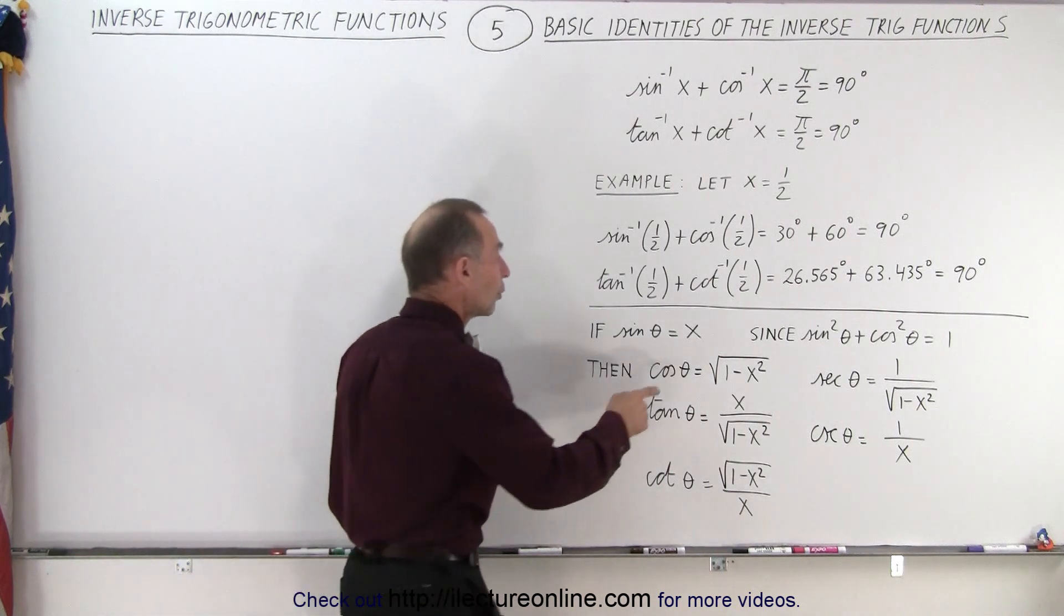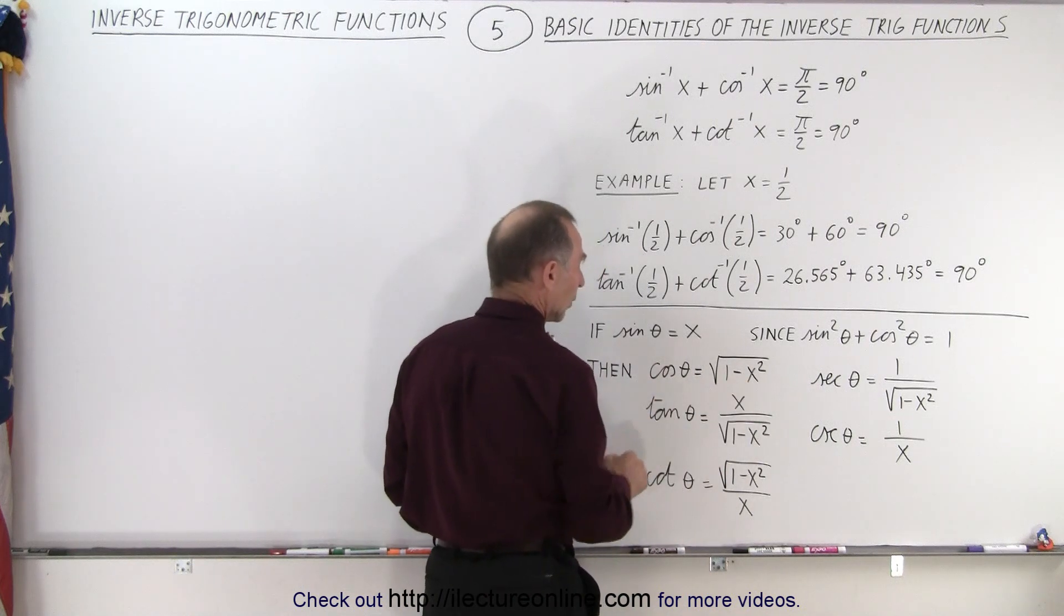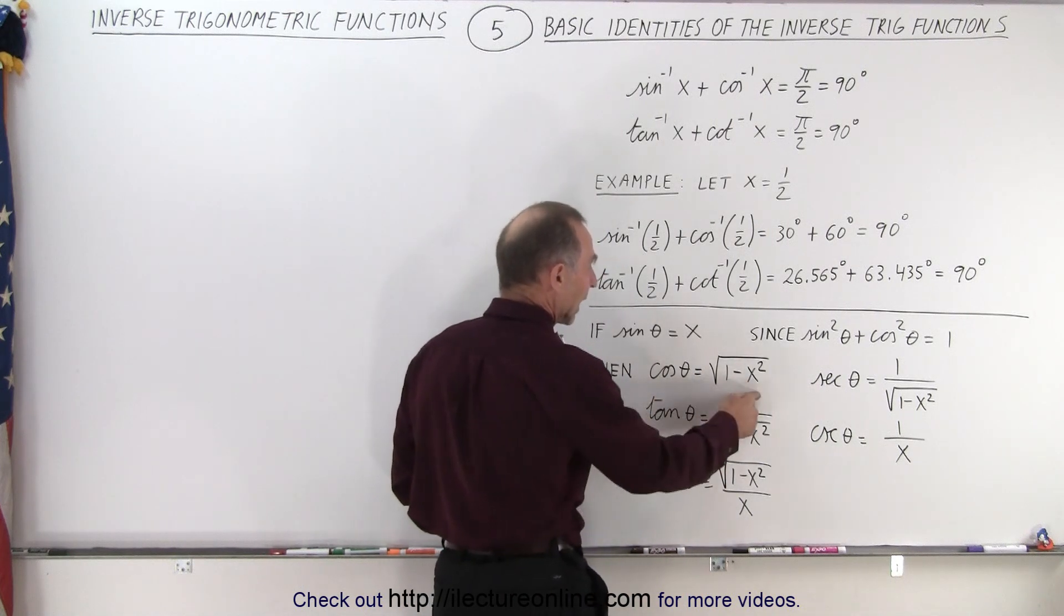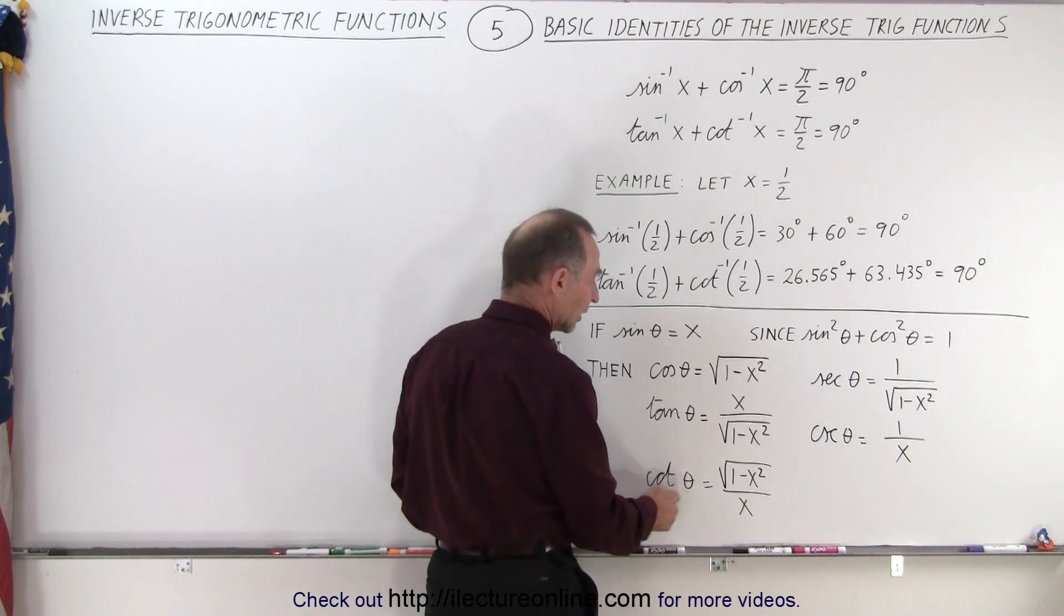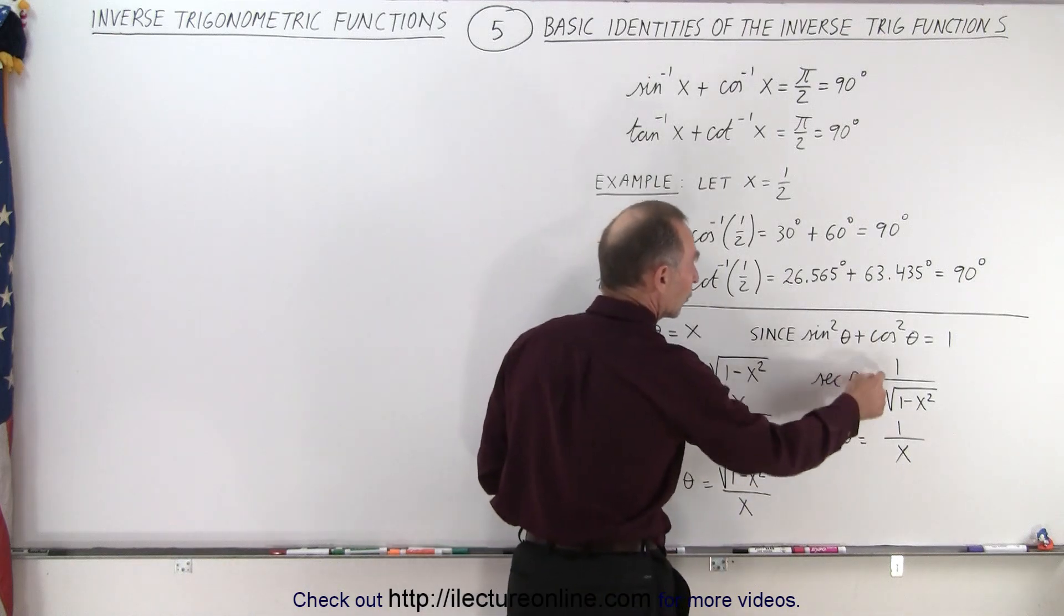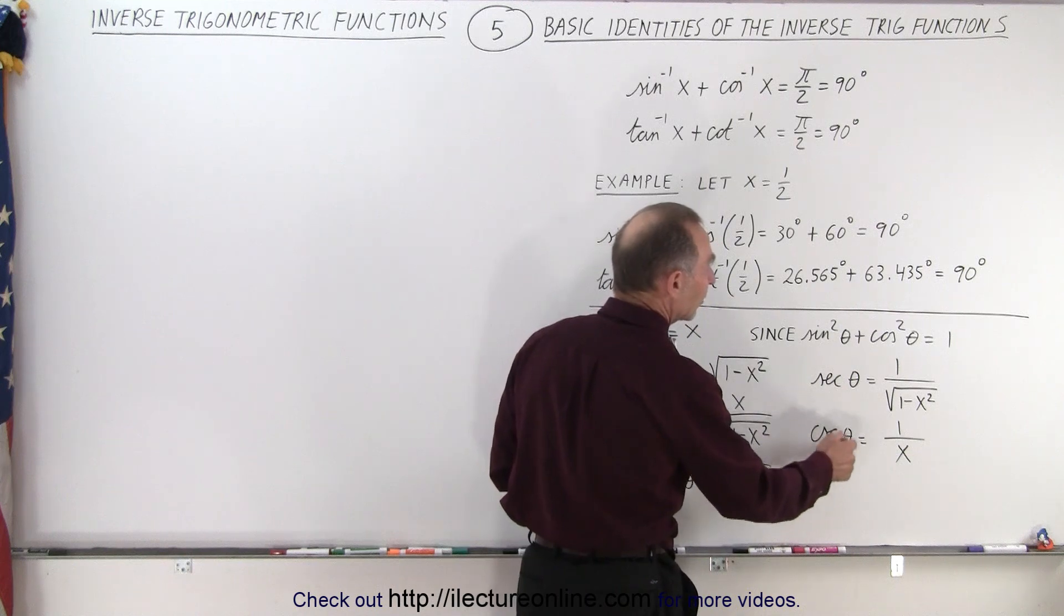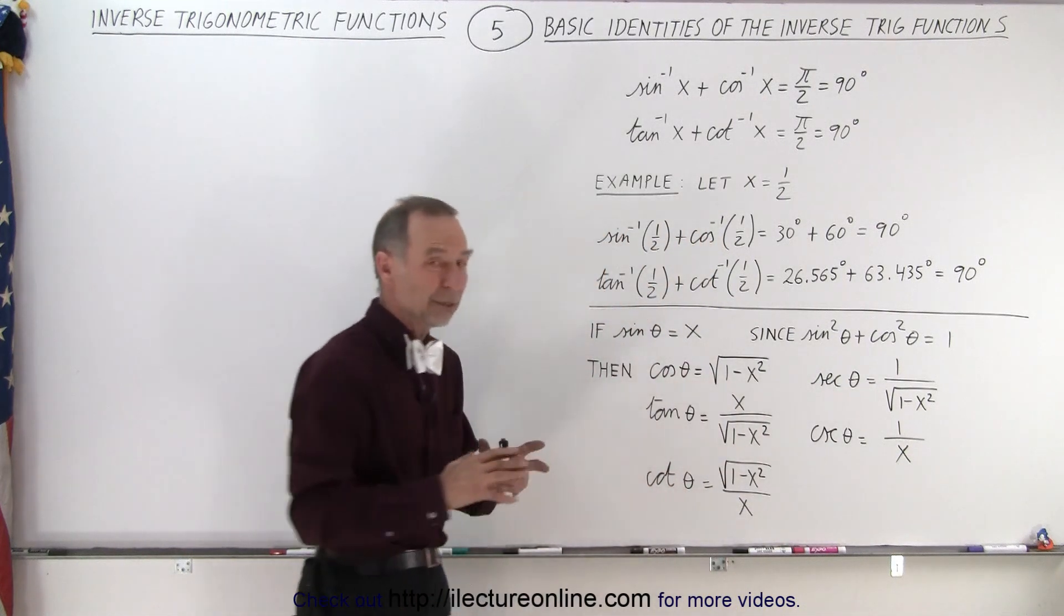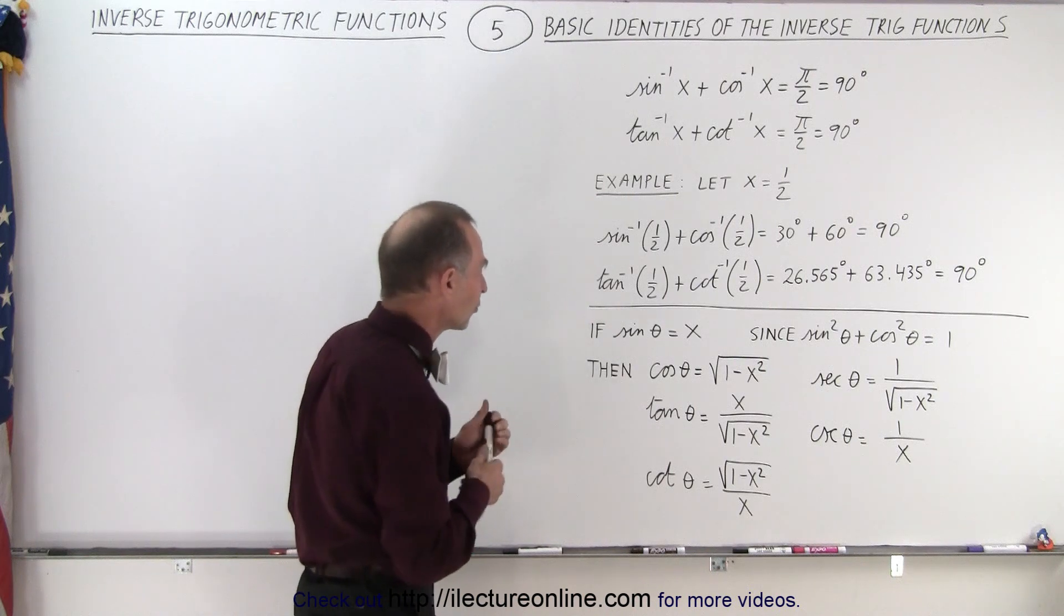Then we can also write the cosine of theta as being equal to the square root of 1 minus x squared. We can write the tangent as being x over the square root of 1 minus x squared. We can write the cotangent of theta as the square root of 1 minus x squared over x. The secant of theta is 1 over the square root of 1 minus x squared. And the cosecant of theta is equal to 1 over x. Those are simply the relationships between the various inverse trigonometric functions.